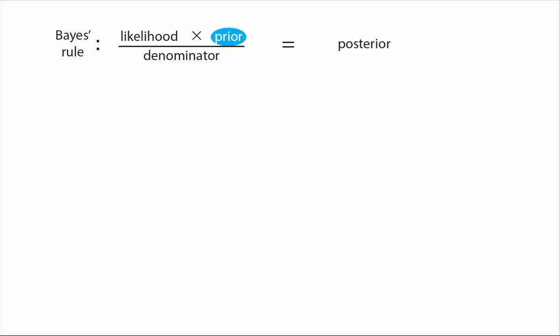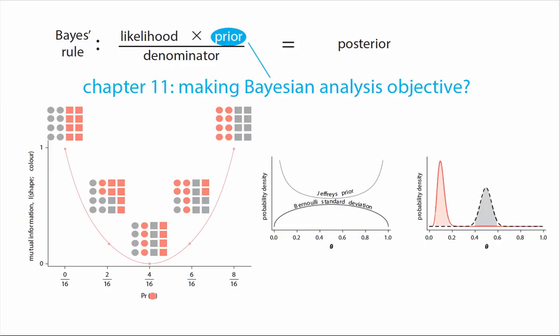In chapter 11 I look again at the prior element of Bayes' rule and examine some attempts that have been made to make Bayesian inference quote-unquote objective. While I argue quite strongly that these attempts are somewhat misguided, it still helps to know about these concepts so that if you encounter them in the literature you know what's going on.